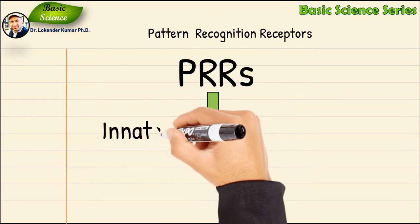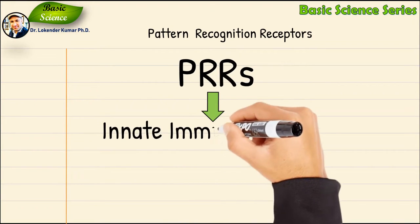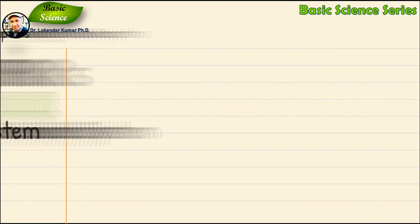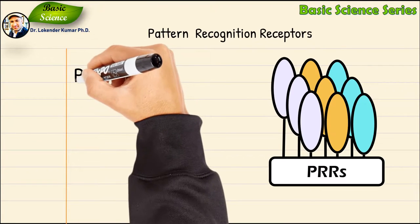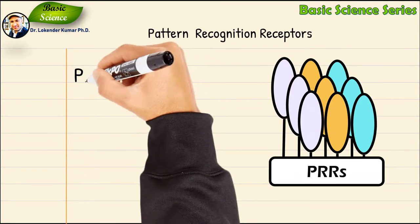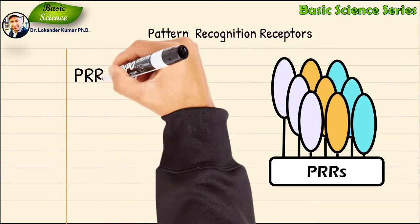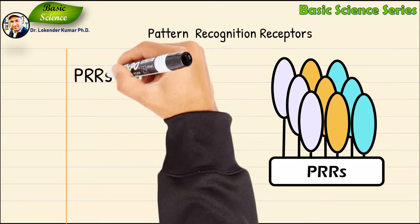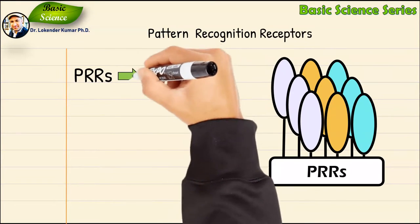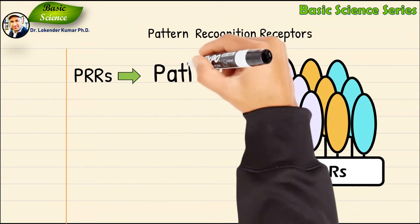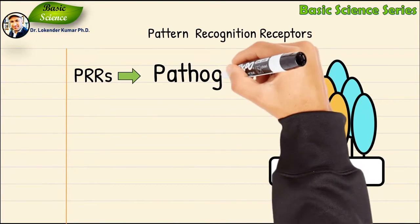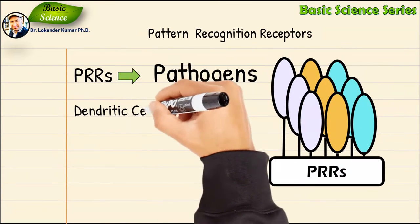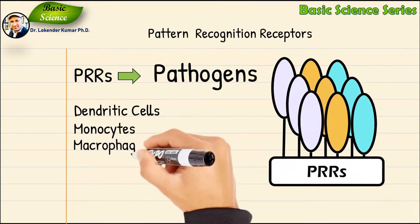Pattern recognition receptors play a crucial role in the proper function of the innate immune system. PRRs are germline-encoded host sensors which detect molecules typical for pathogens. They are proteins expressed mainly by cells of the innate immune system such as dendritic cells, macrophages, monocytes, neutrophils, and epithelial cells.